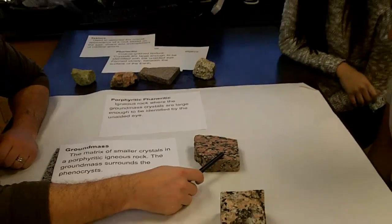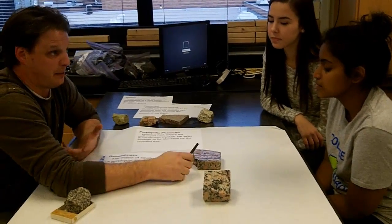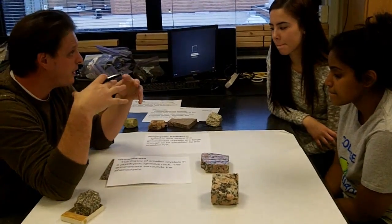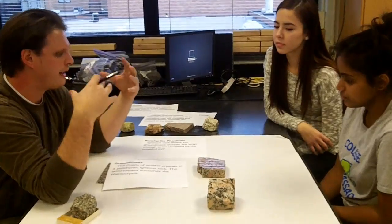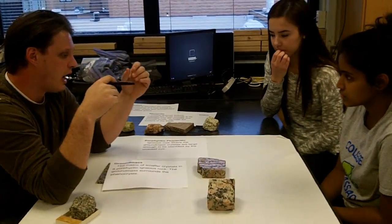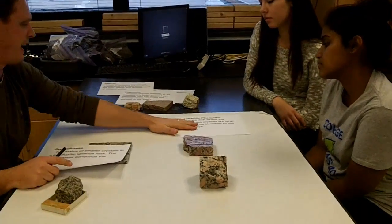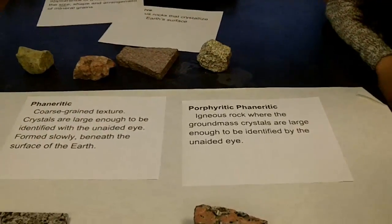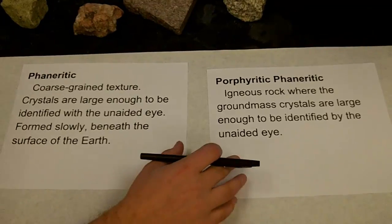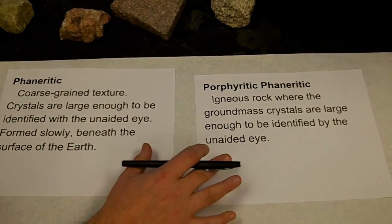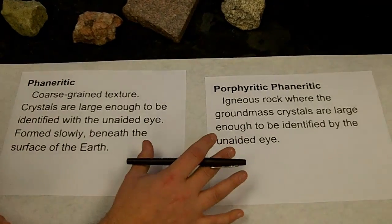Everything can be identified with the unaided eye, but some crystals are just larger. Does this still look like it formed inside the earth? — Yeah. — Exactly, because everything is big. There may have been different cooling rates — as it began to cool, the rate may have slowed or sped up a little, causing some minerals to grow larger than others. So we have phaneritic — all the same size — and porphyritic phaneritic — two different crystal sizes, both visible to the unaided eye.